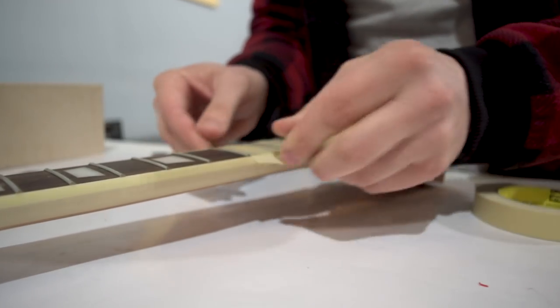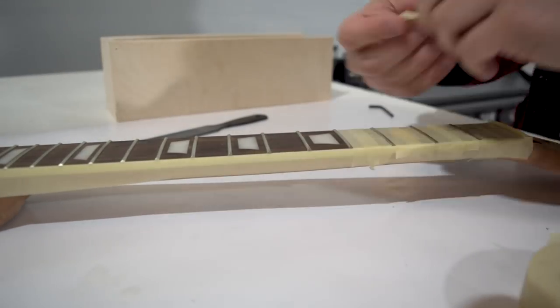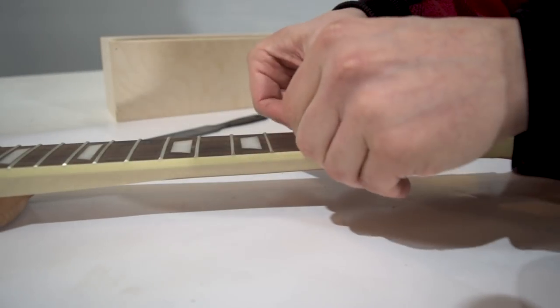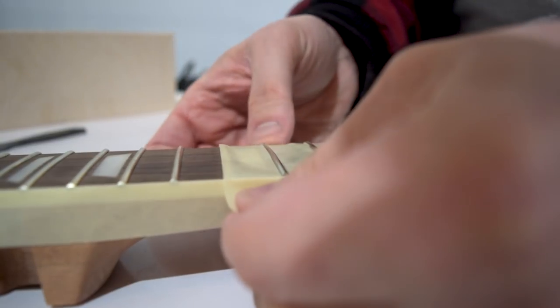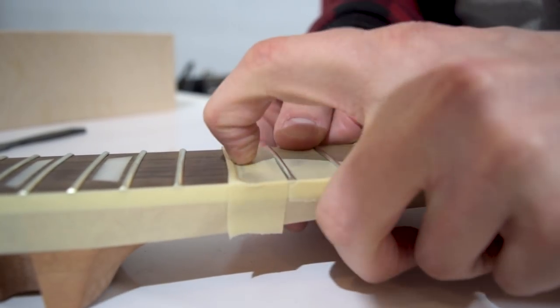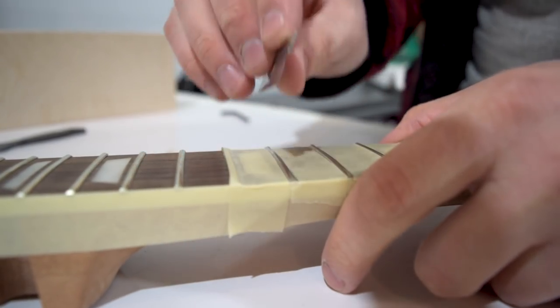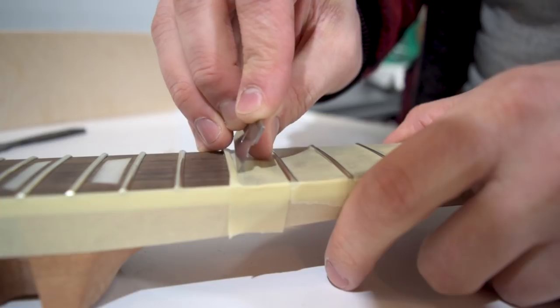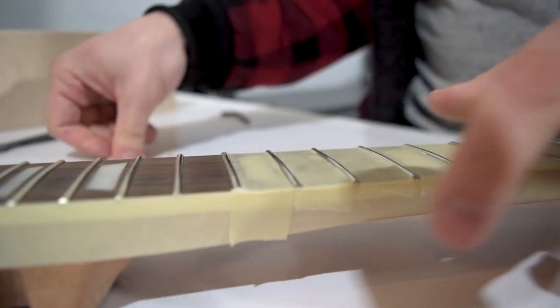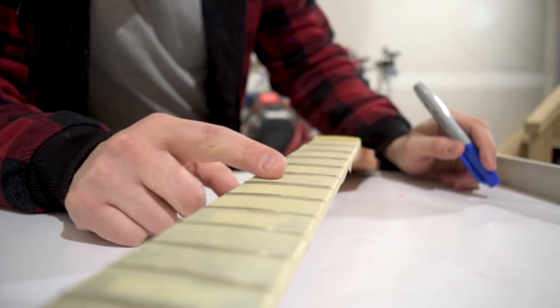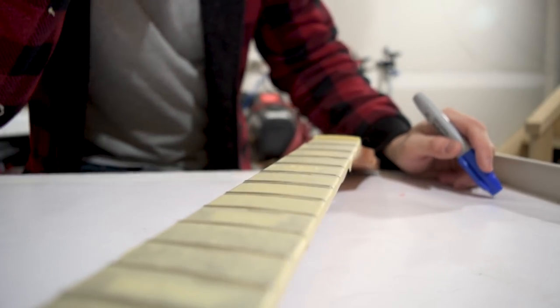You can get a couple of different thicknesses of tape if you want to help you do this. Sometimes that makes it a little bit easier. Don't get lazy with this. It doesn't take all that long. Tape off your fretboard and make sure that it is well protected. Because if you damage your fretboard, you're going to regret it.